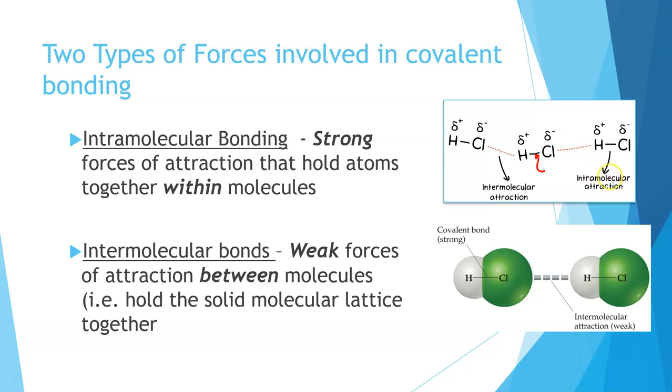However, intermolecular bonds, these are the bonds between molecules. So between molecules, they are weak. And this is what determines the melting point and boiling point of substances. So this explains why a lot of molecular compounds are gases or liquids at room temperature because those states are determined by the strength of the intermolecular bonding between the molecules.